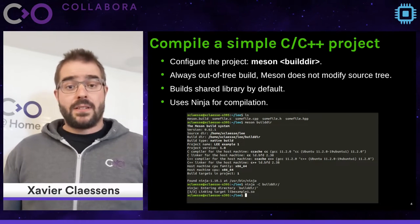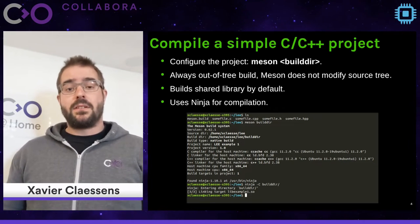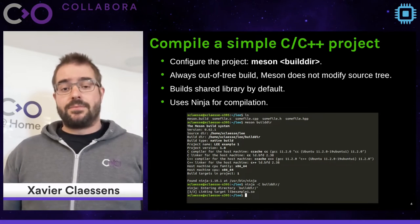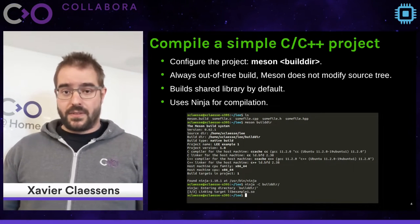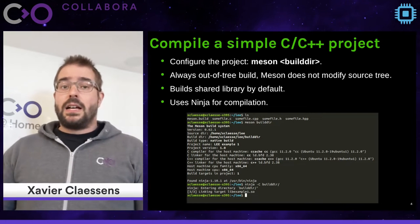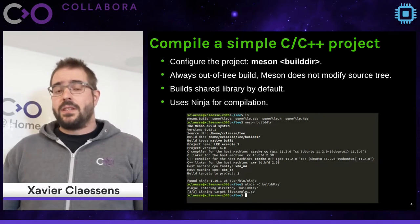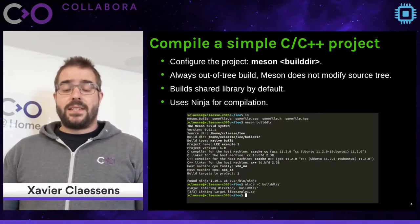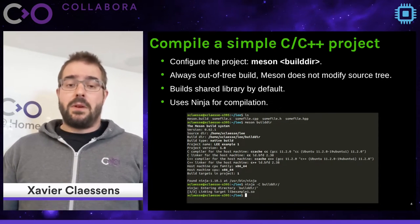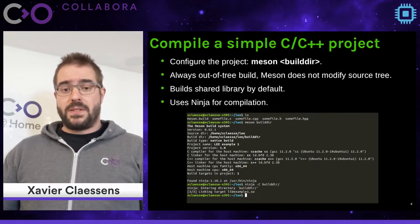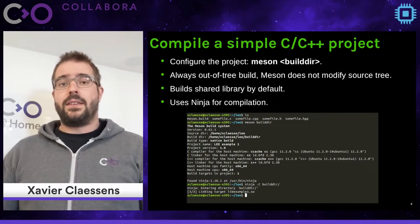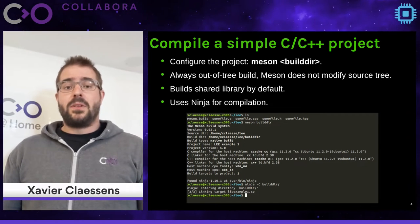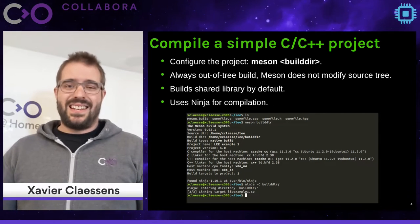Meson only configures your project — it generates a Ninja configuration. For Ninja we need version 1.8.2. That's the default backend, but we also have a Visual Studio backend and an Xcode backend for macOS. Those backends are less used and less tested, so we really recommend using the Ninja backend.